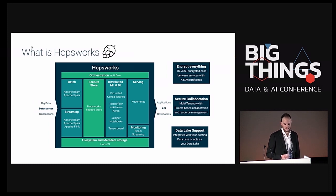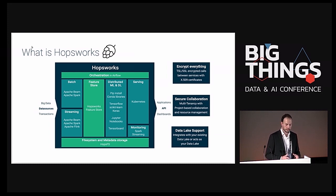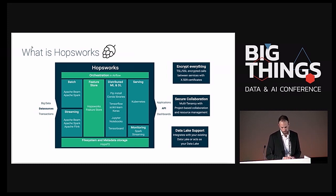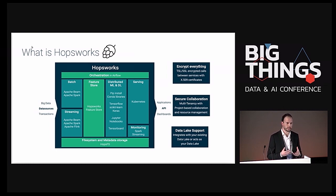Zooming in on the technology stack: at the bottom layer we have HopsFS, our distributed file system. The unique thing about all these technologies is that we keep the metadata of all these different technologies in the same metastore in our file system. We support streaming with Beam, Spark, and Flink. You can also do batch with the same technologies. We have the feature store built in-house, and different distributed machine learning and deep learning technologies — really any Python library, but the main ones are TensorFlow and PyTorch. After training your model, you can serve it with Kubernetes in an elastic way.